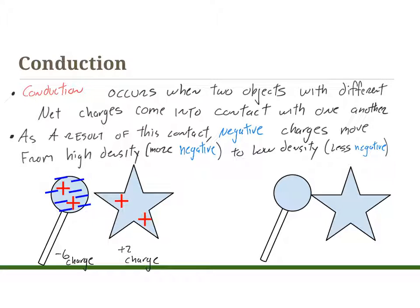They're not touching yet. Now we're going to go ahead and touch the lollipop to the star. When we touch them together, we have to remember — like we talked about earlier in this unit — that positives can't move. They have to stay put because they're generally inside the nucleus of the atom. But the negative charges can move. In this case, the negative charges will move until the charge in both objects is equal.